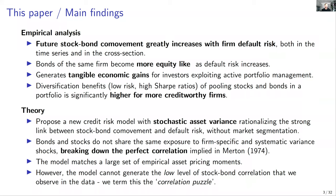The key message of the paper is that even if you go to the state-of-the-art model without market segmentation, you can match all those stylized facts but fail to match the unconditional level of correlation — which leaves the question of why, and potentially market segmentation is the answer. An additional point: while the model fails to generate the low unconditional level of dependence, it does a great job at generating time series and cross-sectional variation in dependence, which is most likely not impacted by market segmentation.